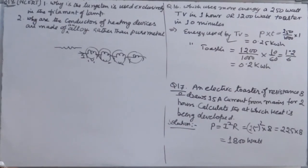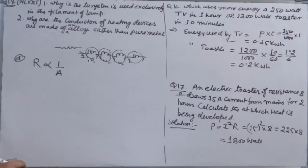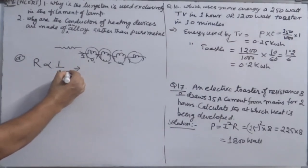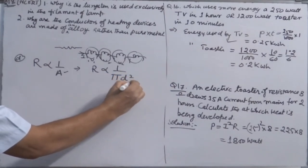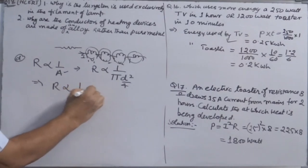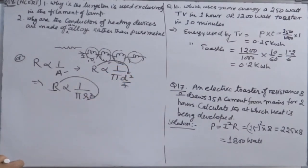Part D: How does the resistance of a wire vary with area of cross-section? Resistance is inversely proportional to the area of cross-section. Since area = π D²/4, resistance is also inversely proportional to the square of the radius and inversely proportional to the square of the diameter.